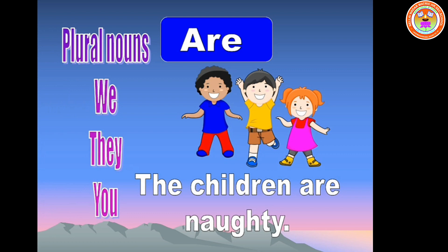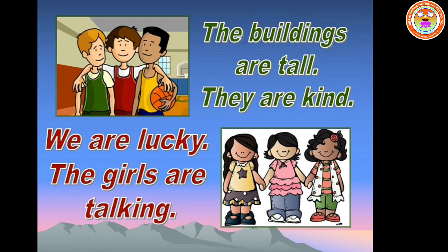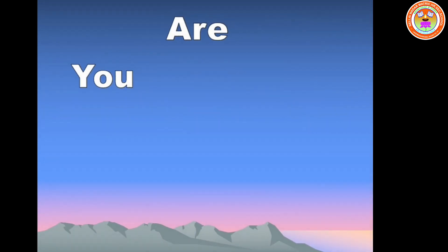Example: the children are naughty. The buildings are tall. They are kind. We are lucky. The girls are talking. In these sentences, the children, the buildings, they, we, the girls are plural subjects. So we use are.